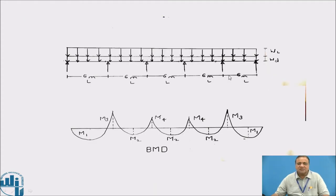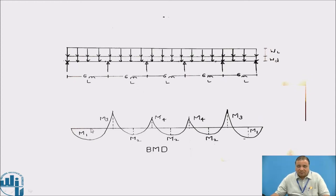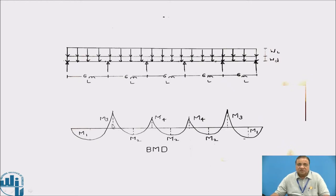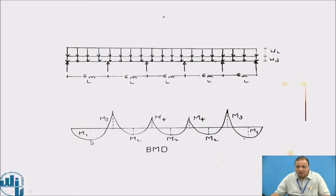Here is the bending moment diagram for this 5-span continuous beam, each 6-meter span with WD and WL. We have two span moments: M1 at middle of the end span, and M2 at middle of the interior spans — both are sagging. For support moments: M3 at the support next to the end support (this is maximum), and M4 at the interior supports. So we calculate four moments total — two span moments M1 and M2, and two support moments M3 and M4. Of these, M3 is the highest.